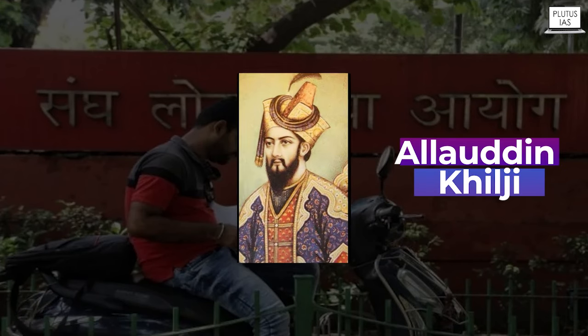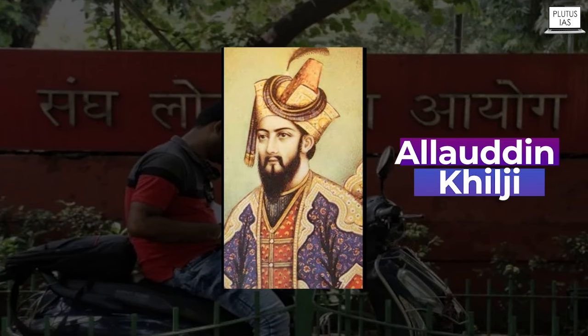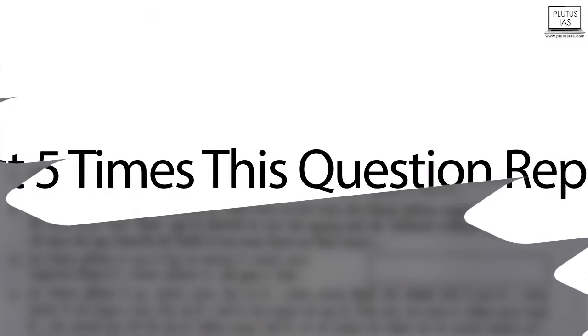For example, take the case of Alauddin Khilji — about Alauddin Khilji, only one question has been asked: market reforms. And on those market reforms, for the last 30 years, at least five times this question has been repeated. Similarly, four to five times questions have been asked on Muhammad bin Tughluq's reforms. Ashoka Dhamma has been asked three to four times.